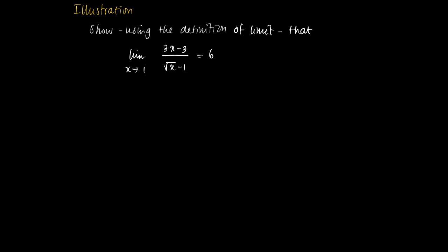So now we will use the precise definition of a limit. For a given epsilon greater than 0, we will try to find delta epsilon such that the distance of the function 3x minus 3 divided by the square root of x minus 1 is close enough to 6. We will show that for delta epsilon equals 1 over 3 times epsilon, this works for epsilons small enough. So we will show that for all x in the domain of f.